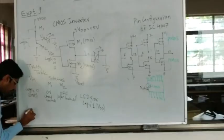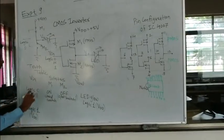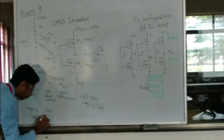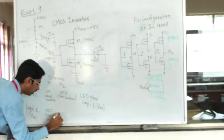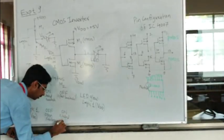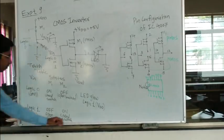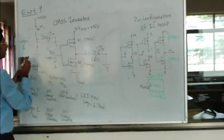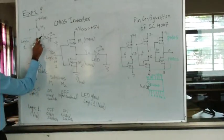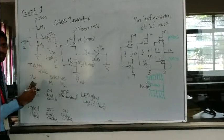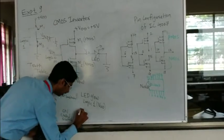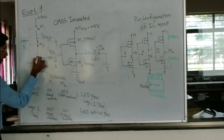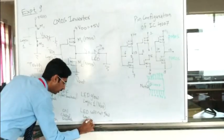For the second case, if we set input to logic 1 — that is, the input is connected to VDD — then M1 becomes off, which we call an open switch. And M2 will turn on, that is a closed switch. So the equivalent circuit shows the anode is connected to ground and the cathode is also connected to ground, so the LED will not glow. The output is directly connected to ground, so the output is logic 0.